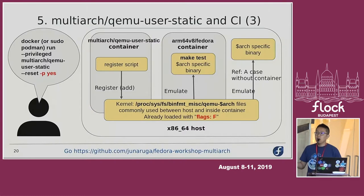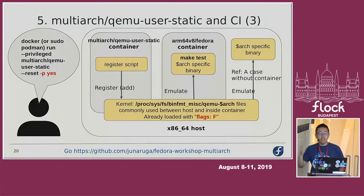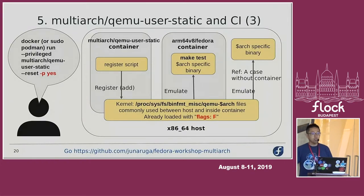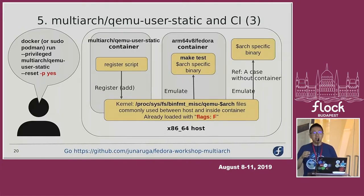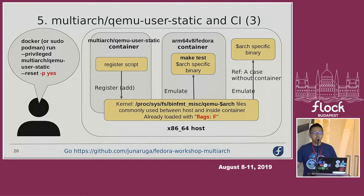This picture shows how the multi-arc QEMU user static image works. When running the image, the image executes a register script inside of the container. The register script creates a new binfmt_misc file from inside the container. The key point, again, is that binfmt_misc files are commonly shared inside the container and the host OS. As a result, ARC binary files work via binfmt_misc, both inside and outside of the container.